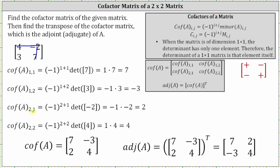Cofactor A sub one comma two is equal to negative three. Cofactor A sub two comma one is equal to negative one raised to the power of two plus one. And if we eliminate row two, column one, we have times the determinant of the one by one matrix with an entry of negative two. Simplifying, the cube of negative one is negative one. The determinant is equal to negative two. Negative one times negative two is positive two.